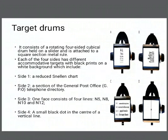The target drums consist of a rotating four-sided cubicle drum held on a slider, and the slider is attached to the square rule. Each of the four sides has different accommodative targets with black print on a white background, such as a reduced Nellen chart on side one as seen in figure A, a section of a general post office telephone directory on side two as seen in figure B, and a print of N5, N8, N10, and N12 on side three as seen in figure C, and a small black dot in the center of a vertical line on side four as seen in figure D.